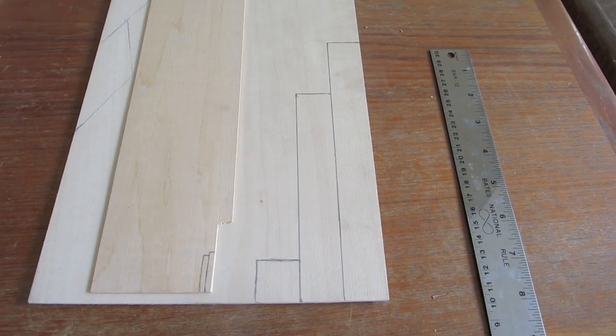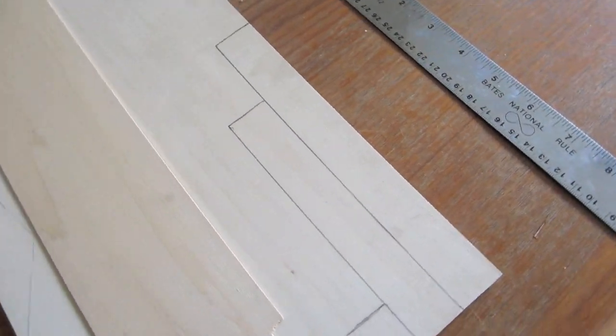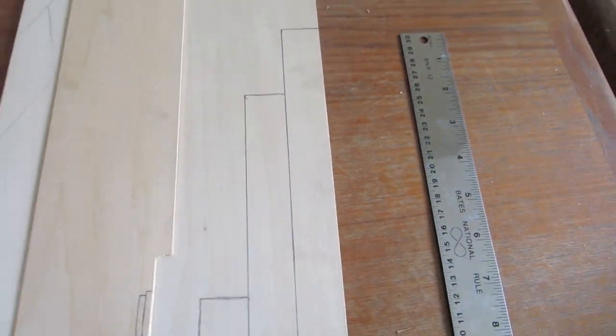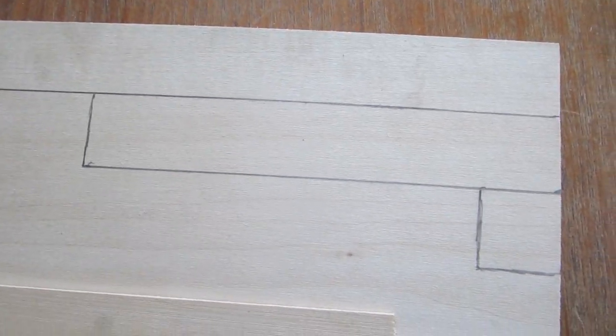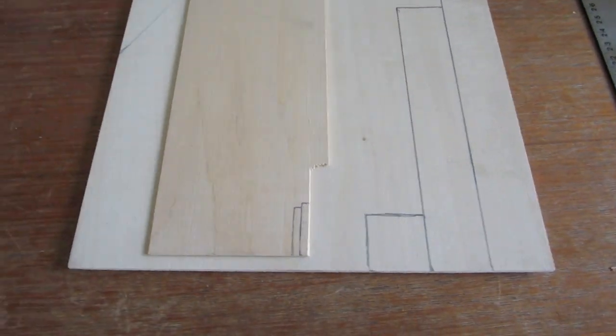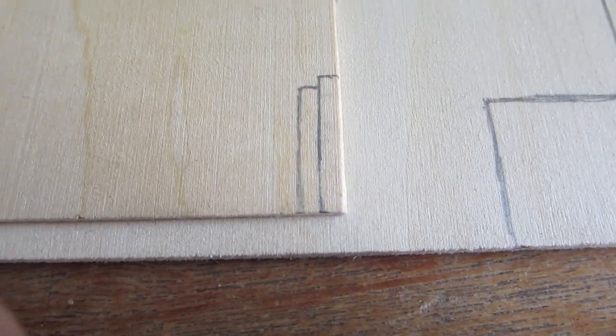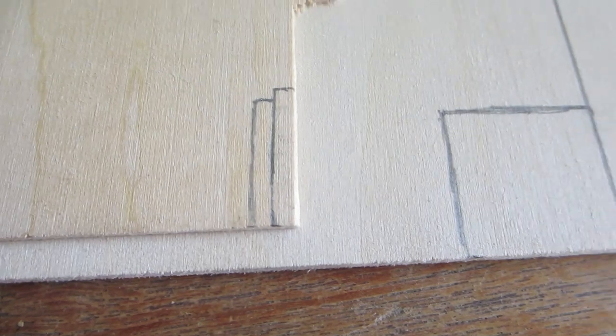The first thing you will need to do is mark the pieces. Out of the 1/8 inch thick basswood, you need an 8 inch by 1 inch piece, a 6 inch by 1 inch piece, and a 1 inch by 1 inch piece. Out of the 1/16 inch basswood, you will need a 1 inch by 1/8 inch piece and a 7/8 inch by 1/8 inch piece.